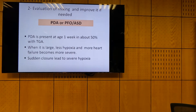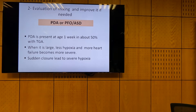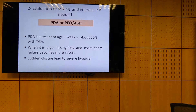PDA is present in 50% of TGA patients in the first week — like the normal population. When it's large, we have good mixing, so they present less blue — somewhere in the 80s or high 70s, not in the 50s or 60s. If the PDA suddenly closes, or if you help it close by giving the baby oxygen, saturation will drop lower and lower. If cyanosis is due to a cardiac cause, giving oxygen won't help and may worsen it. When it's getting worse with oxygen, just expect TGA and stop oxygen. Oxygen is a very important vasoconstrictor for the duct.